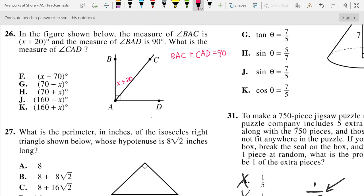I think everyone would agree with that, but here's what I'm going to do now. I'm going to substitute this in for BAC. So now I have X plus 20 plus angle CAD equals 90.